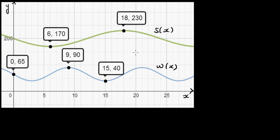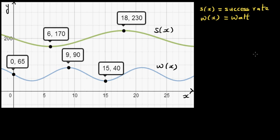I want to write the equation of these two graphs. The top one I'm defining as S of x, which is the success rate in problem solving, and W of x stands for the energy in watts. A human body follows a rhythm called a circadian rhythm. The top graph is for the success rate and W is for the energy, and we want to find when is the best time to solve a complicated problem for a particular person.